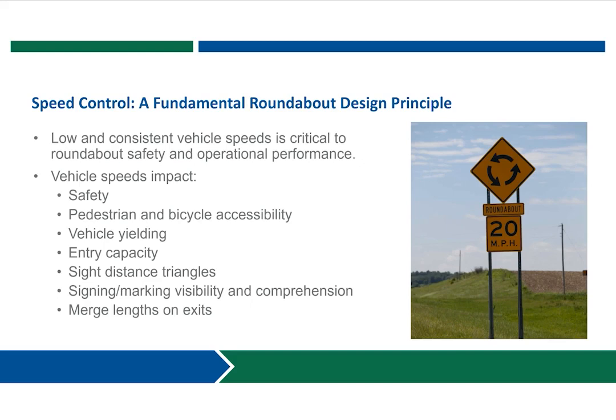When designing a roundabout, one of the fundamental principles is achieving speed control. Getting slow and consistent speeds is really a critical element to getting the operational and safe performance we expect from roundabouts. Vehicle speeds impact a whole host of items, including crash frequency and severity, pedestrian and bicycle accessibility and comfort, vehicle yield rates at entries, capacity of a roundabout and the size of gaps needed for vehicles to enter, the size of sight distance triangles, driver comprehension and visibility of signing and markings, as well as geometric elements like merge and taper lengths if you have a lane drop on an exit.